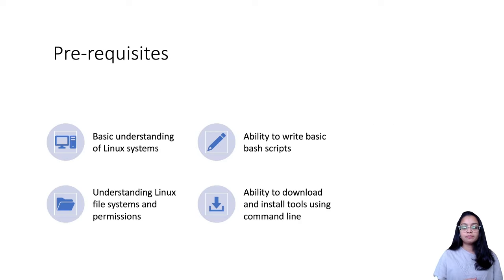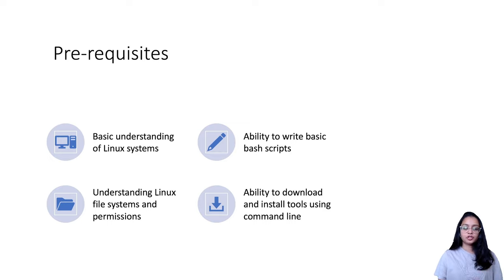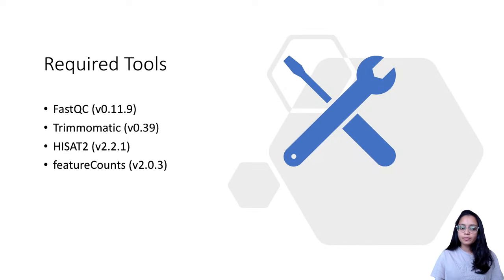Since we are building this pipeline in Bash, there are certain aspects I won't be covering in this video. I expect you have a basic understanding of Linux systems, the ability to write basic Bash scripts, an understanding of Linux file systems and permissions, and knowledge of how to download and install tools using the command line. Resources will be added in the description below. To build this pipeline, we will use four tools: FastQC, Trimmomatic, HISAT2, and featureCounts.